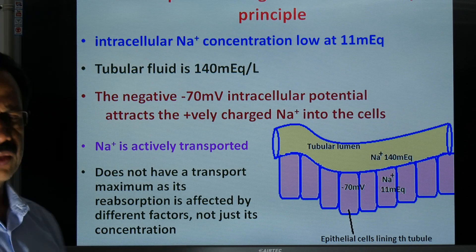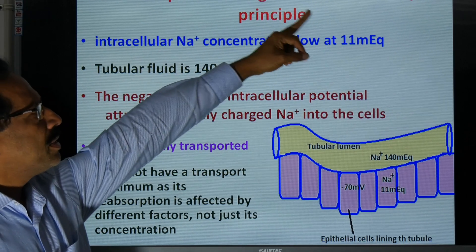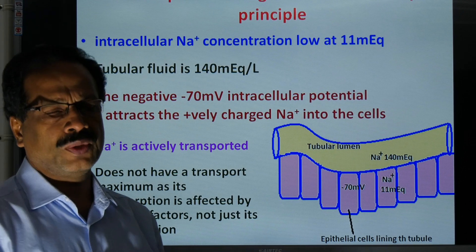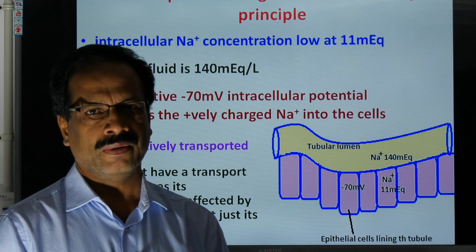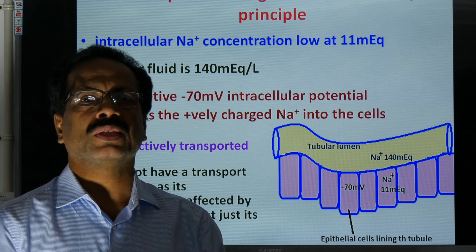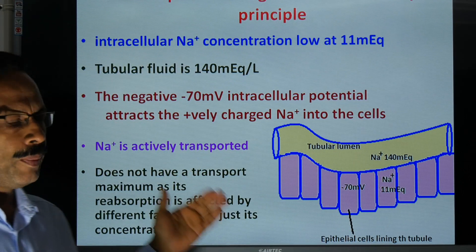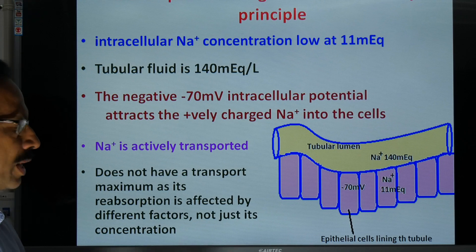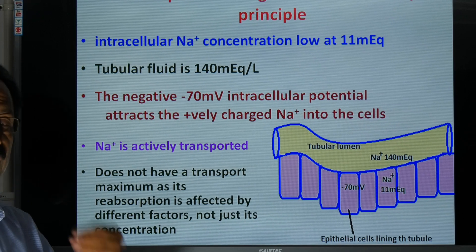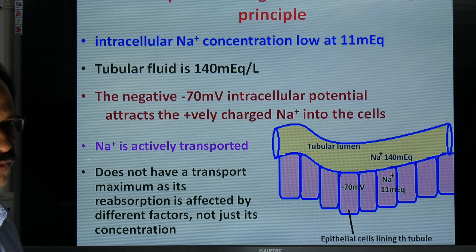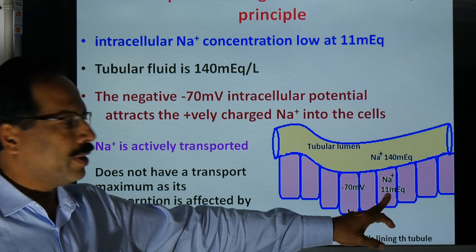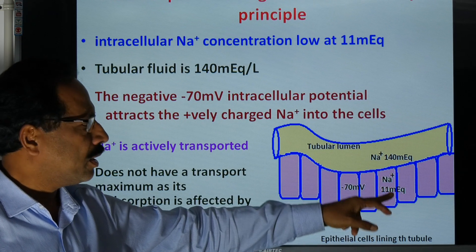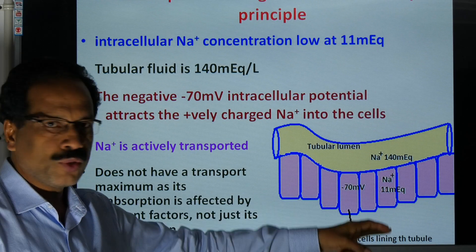Sodium transport follows the gradient-time transport principle. Normally, active transport has a transport maximum — the maximum amount that can be absorbed by the tubules. But in the case of sodium, absorption is not controlled by transport maximum because it is affected by many factors in addition to concentration. In the epithelial cell, sodium concentration is 11 milliequivalents, whereas in the tubular fluid it is 140 milliequivalents, creating a huge concentration gradient that drives sodium through the transporters.